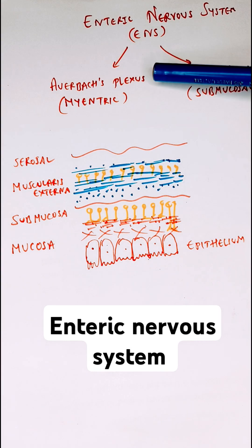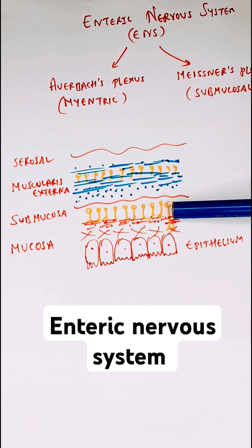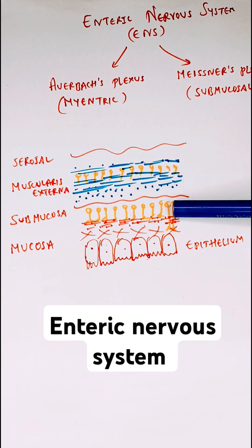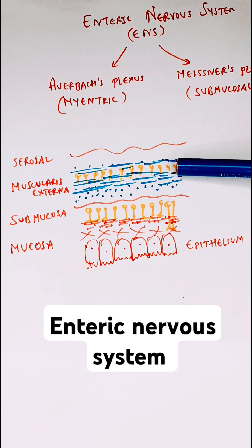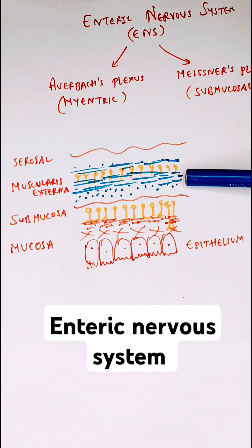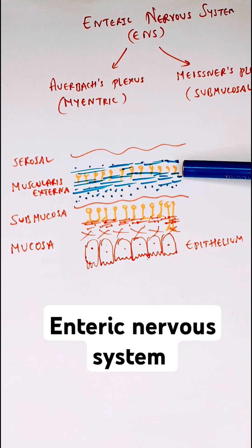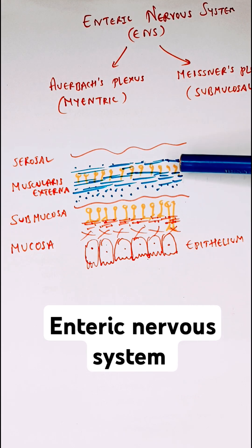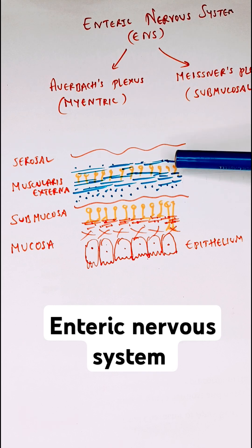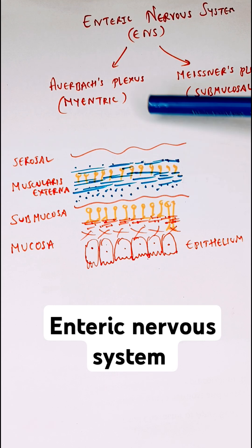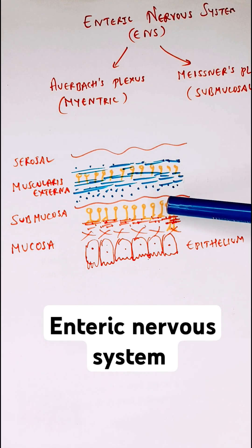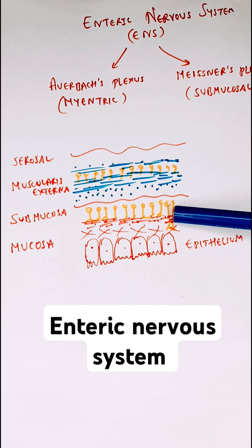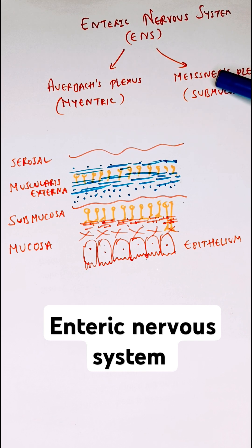Now observe these yellow color nerves. This network of neurons present in the submucosal layer of the GIT, and this layer is present within the muscle layer. Muscularis externa is made up of outer circular and longitudinal muscle layers, and in between these two layers we have neurons — these are called Auerbach's plexus or myenteric plexus. The nerves present in the submucosa are called submucosal plexus, otherwise known as Meissner's plexus.